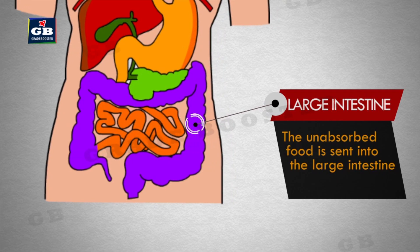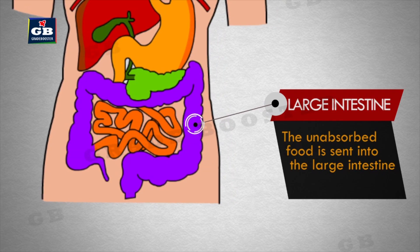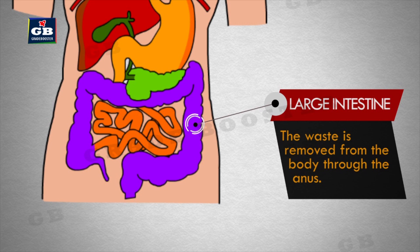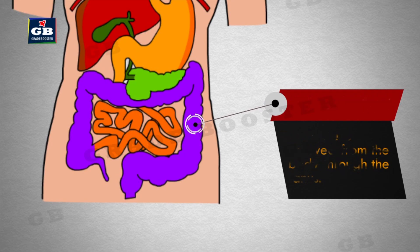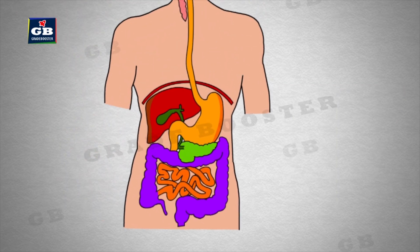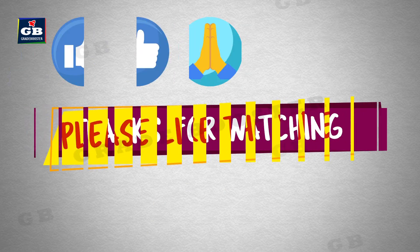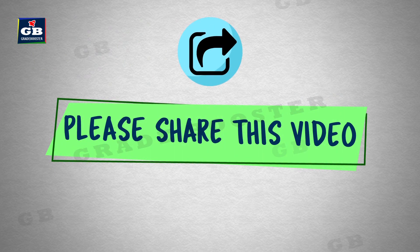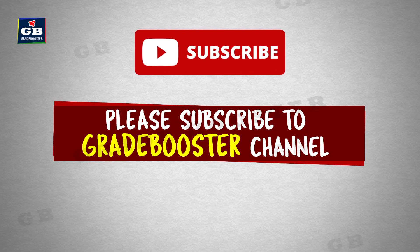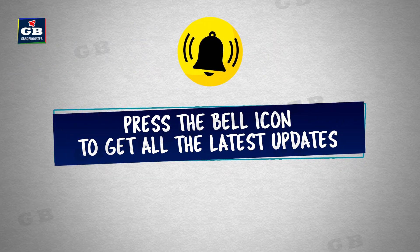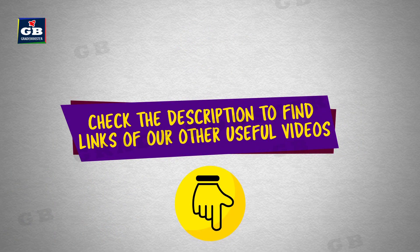The large intestine receives the unabsorbed food, where more villi absorb water from this material. The waste is removed from the body through the anus, which is controlled by the anal sphincter. These are the different parts of the human digestive system. Thanks for watching. Please like the video, share it with your friends, and subscribe to the Great Booster channel. Press the bell icon to get all the latest updates.